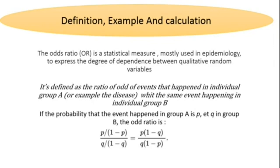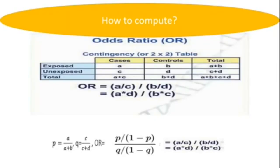The odds ratio is the ratio of the probability of an event and the contrary of that event. If the probability that an event happens in group A is p, and q is the probability in group B, the odds ratio is calculated as the odds of the event in group A divided by the odds of the event in group B. For example, we can have persons affected by a disease who are exposed, and persons without the disease who are exposed.